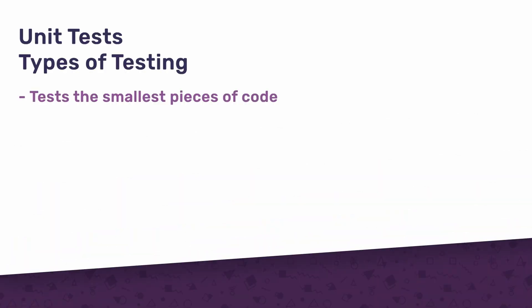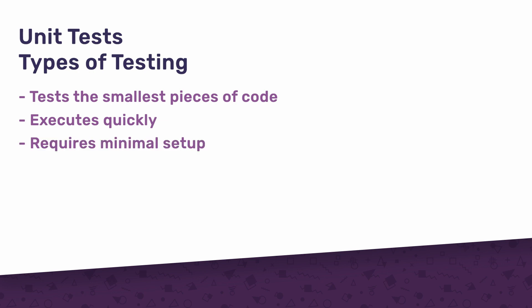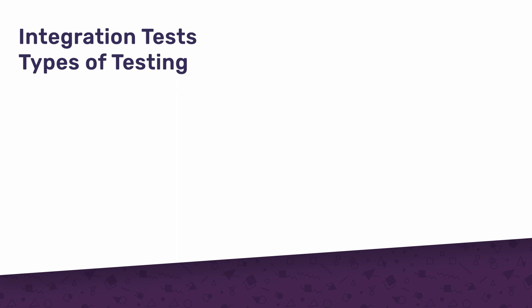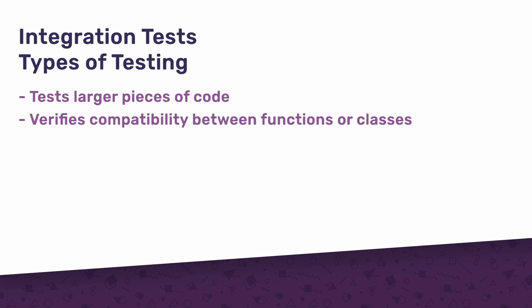Now that we understand the importance of front-end testing and the differences from back-end testing, let's explore some various types of tests that you can employ. First, we have unit tests. These tests target the smallest pieces of code, usually an individual function or method. Unit tests should execute quickly and they require minimal setup. They help ensure the correctness of isolated code components. Next, we have integration tests. These tests work with larger pieces of code, testing how functions or classes interact with each other. Integration tests help verify the compatibility and the correctness of the codebase as a whole.